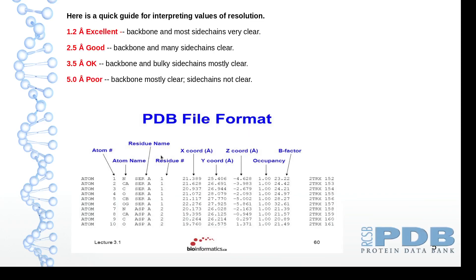So how we evaluate our structures? This is a quick guide to evaluate the structure. 1.5 or 1.2 angstrom is an excellent structure because the backbone and most of the side chains are clear. 2.5 is good, 3.5 is okay.